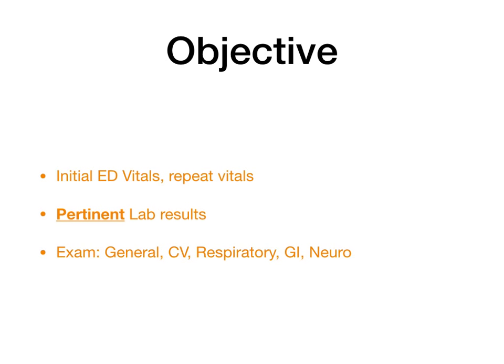Then you go into objective. You always start with the vitals, then the labs, and then your physical exam. If this is the first time the patient is being presented to your attending, you have to start with their presentation in the emergency department. Start with their initial vitals when they first got to the ED, then give any repeat vitals that are pertinent. You only talk about pertinent labs — you don't need to tell your attending every single lab value if those values are normal. You only want to point out pertinent positives or pertinent negatives.